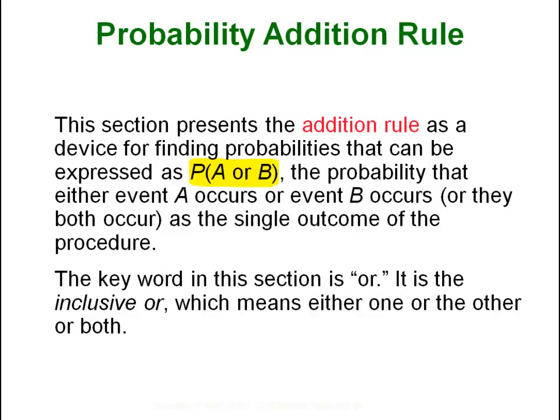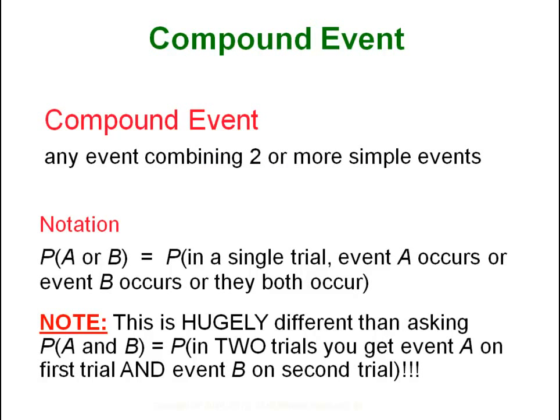Each case comes with its own formula, but really the easiest thing is to generalize and make sure you are counting systematically — not counting anything twice and not forgetting anything. Just remember that 'or' is the inclusive or, which means it could have the property of A, the property of B, or both. A compound event is any event where you have two or more simple events.